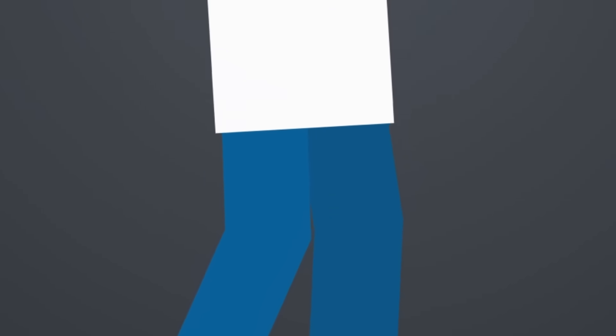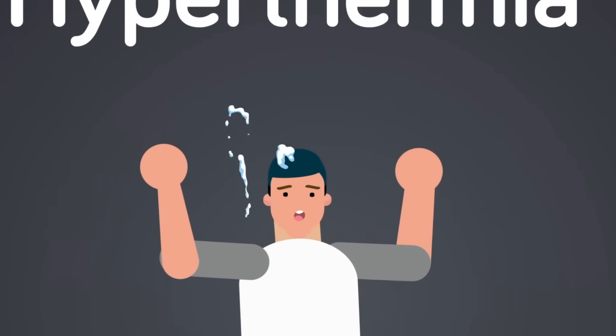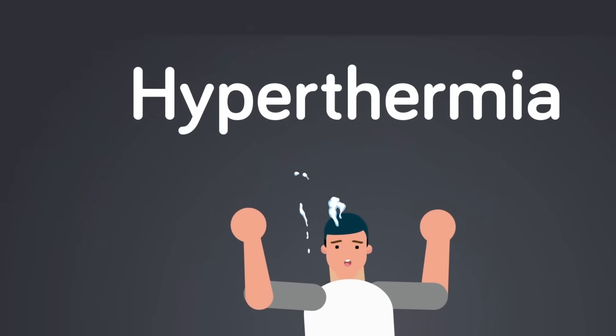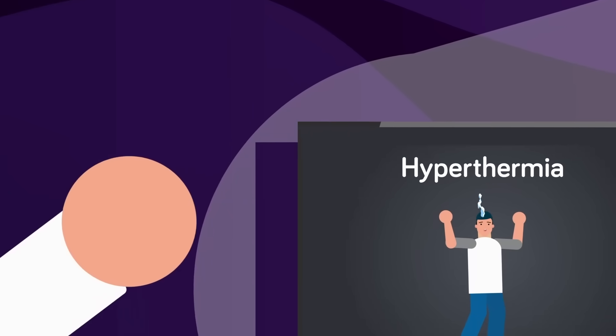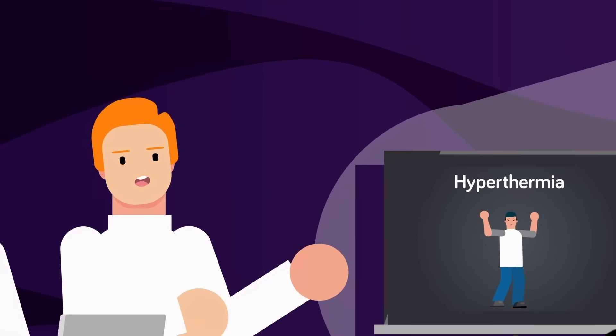As the night progresses at the festival, Alex starts to feel an intense heat overwhelming him, a condition known as hyperthermia. This is not just the result of his vigorous dancing or the packed crowd.